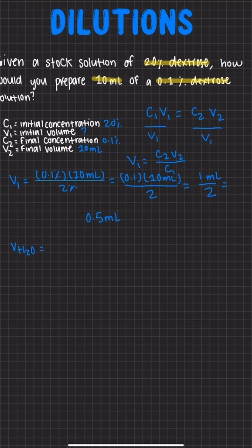And to do that, we are going to subtract our initial concentration from our final concentration. So we're going to do 10 milliliters minus 0.5 milliliters. We are going to get 9.5 milliliters.